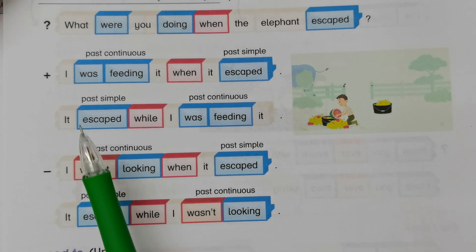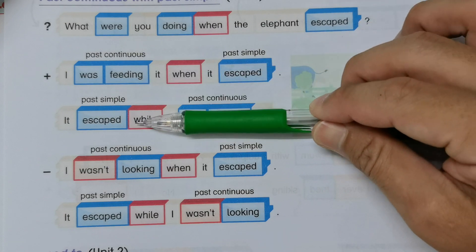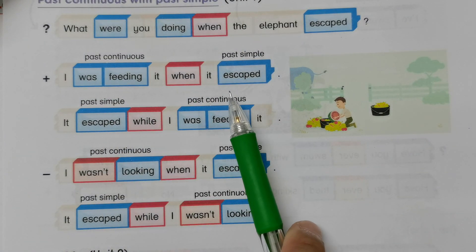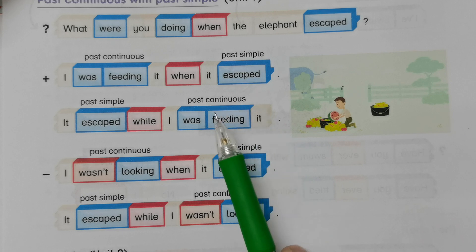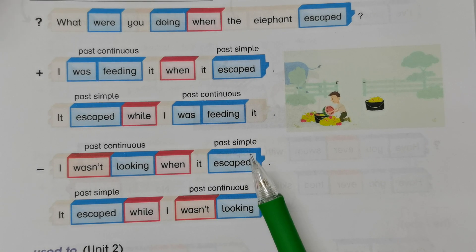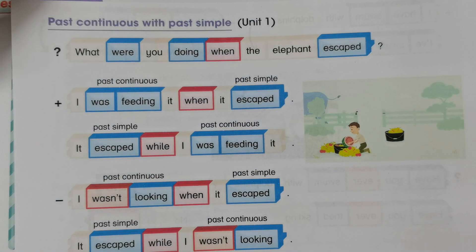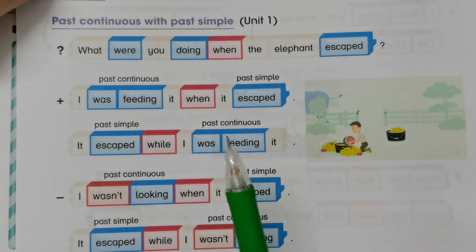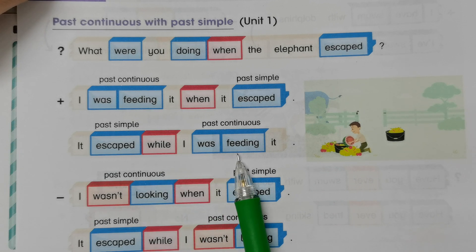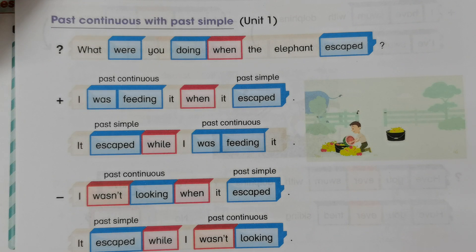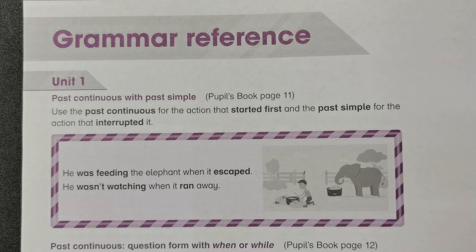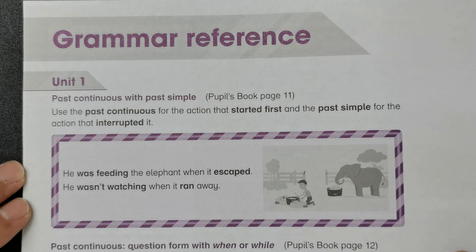For the affirmative form, the first and second sentences are basically the same — they just swap the location of the past simple and past continuous. The negative form also swaps them in the same way. For the interrogative form, note that 'when' is followed by the past simple, while 'while' is followed by the past continuous. That is the basic grammar for past continuous with past simple.